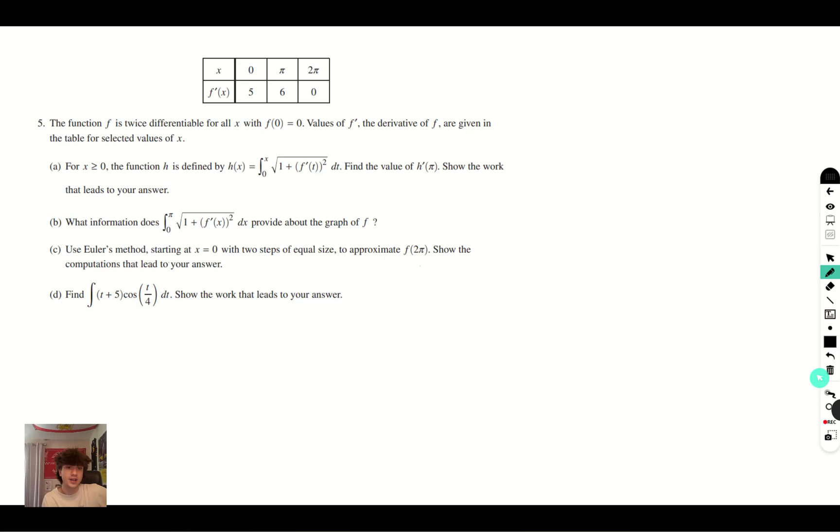So now let's take a look at part b. What information does the integral from 0 to π of √(1 + (f'(x))²) dx provide about the graph of f? So this is a formula that you're going to want to remember because this formula is the arc length formula. This integral gives you the arc length of the function f.